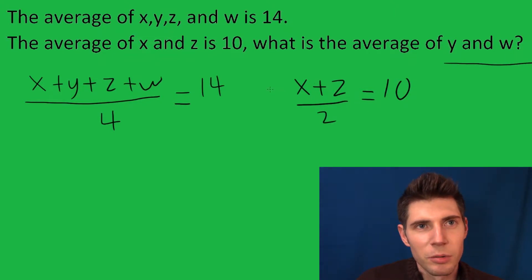So we can multiply both sides by 2. Those cancel and we're left with x plus z equals 20. Well, that's kind of cool because that means we can take out this x and this z here and plug in 20.